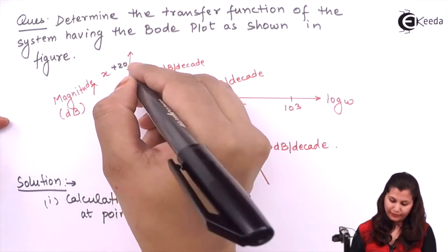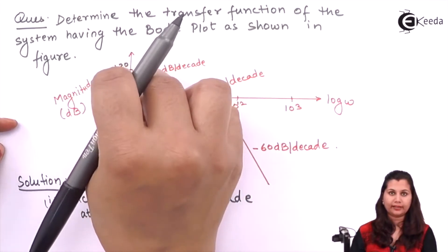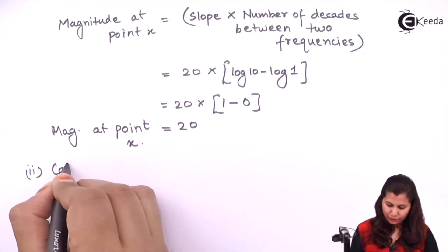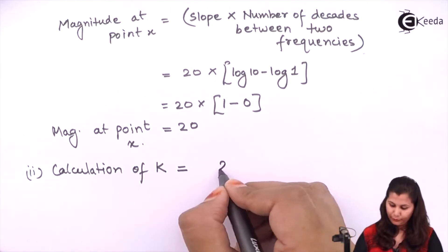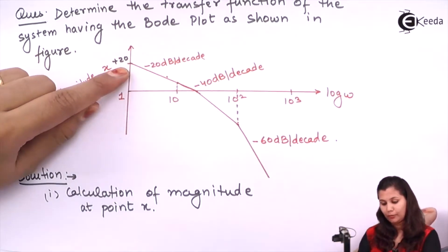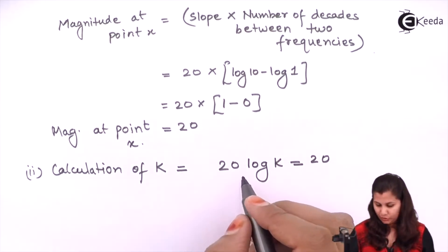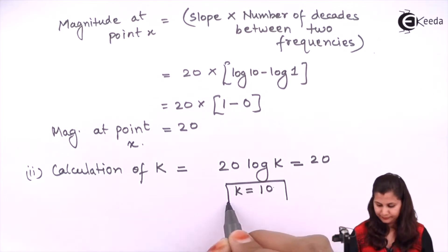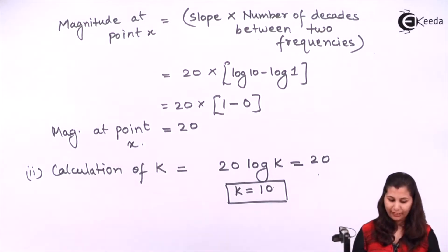This magnitude of 20 corresponds to 20 log k, where k is the constant term. So we set 20 log k equal to 20, which gives log k equals 1, and therefore k equals 10. So we have calculated the constant term k equals 10.